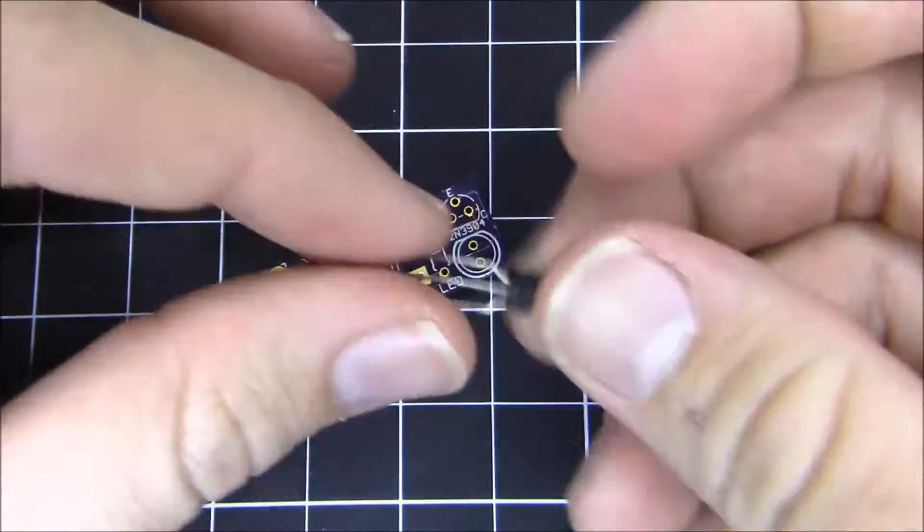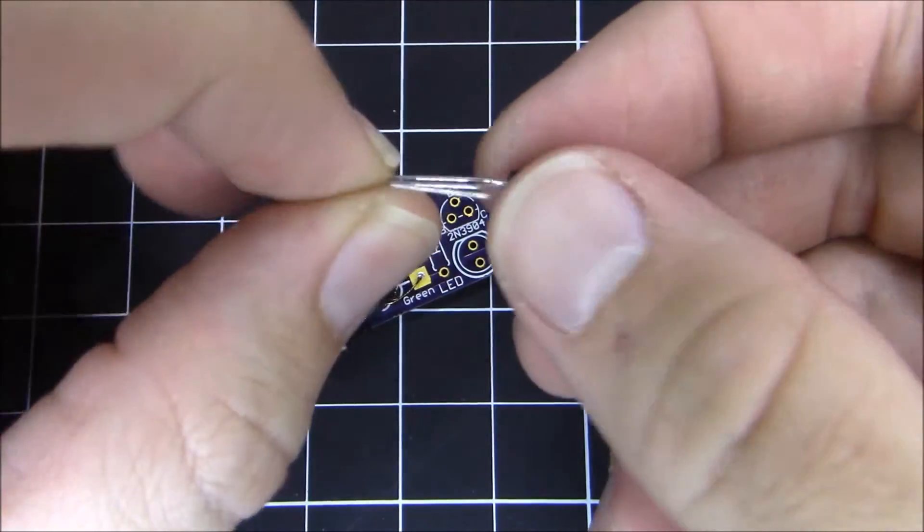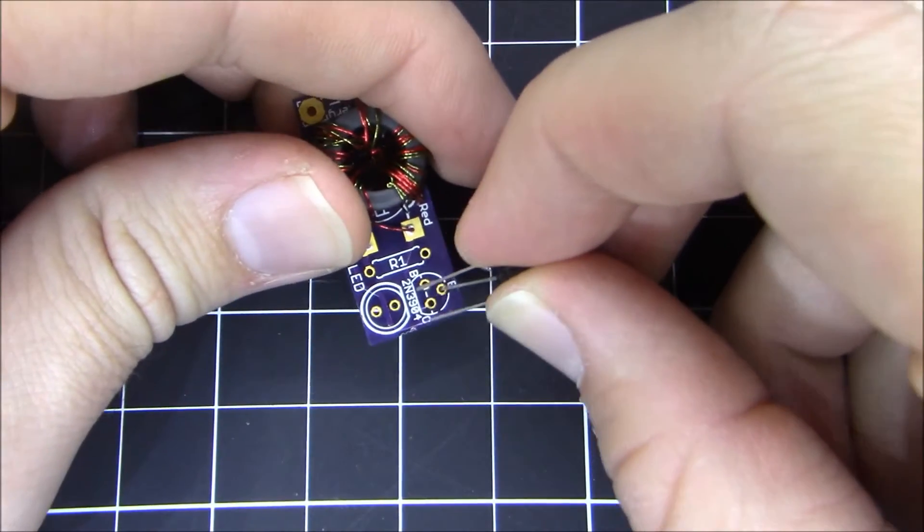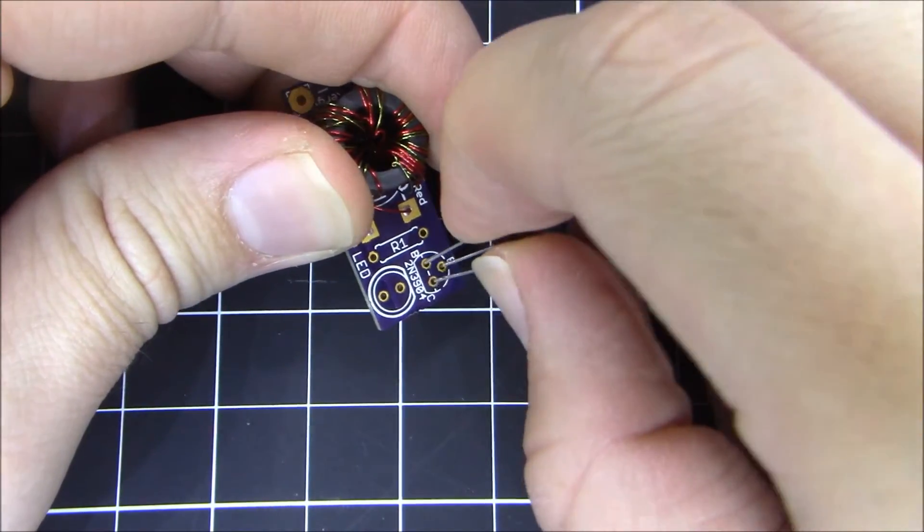And now we're going to move on to the transistor. It looks like this. What you need to do is move the back pin, bend the back pin down a little bit, and then you could kind of fit it into the PCB like so.